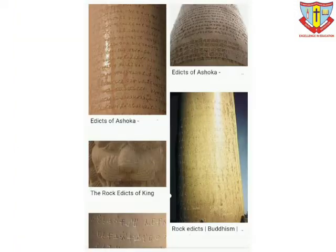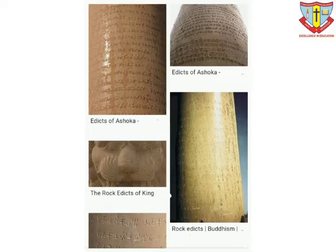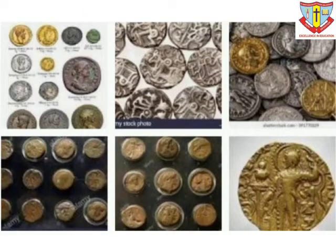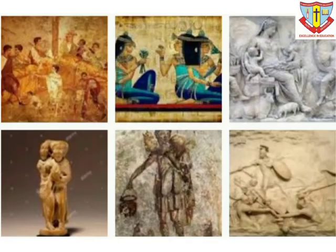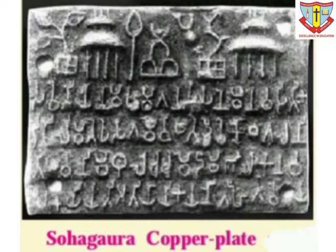The earliest known written documents of historical nature found in India are in the form of inscriptions. They are dated to the 3rd century BC, i.e., Emperor Ashoka Maurya's time. His edicts are inscribed on natural rocks and stone pillars. From the 1st century, inscriptions begin to occur on coins, metal images, sculptures, and also on copper plates.